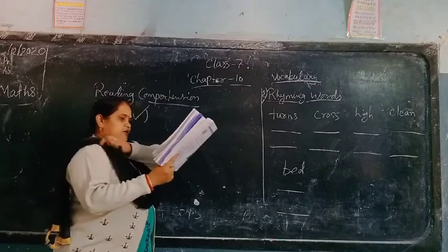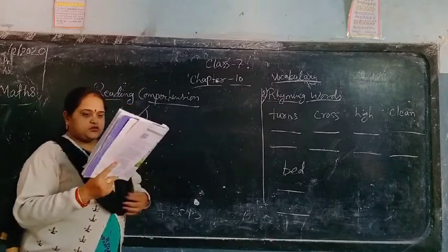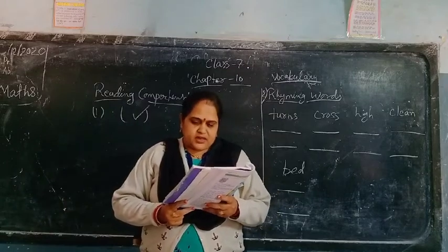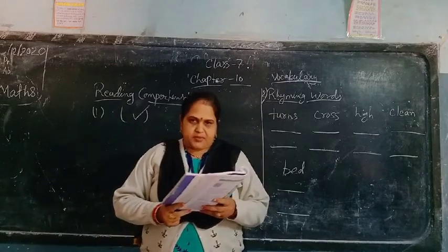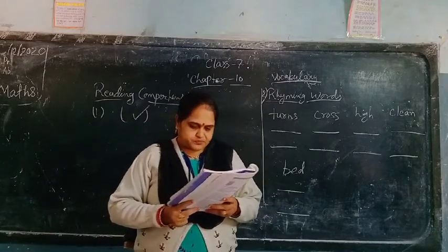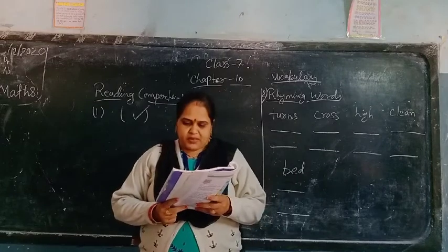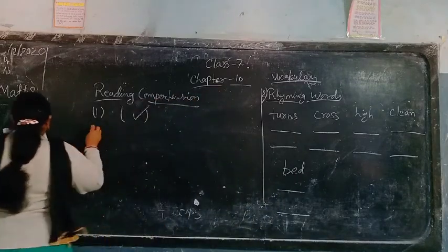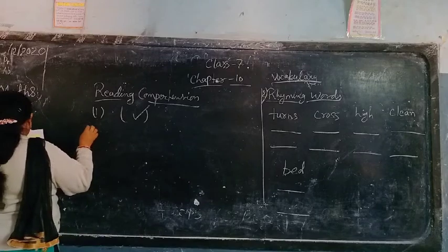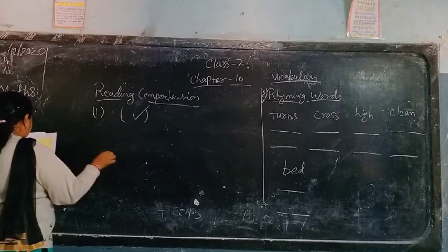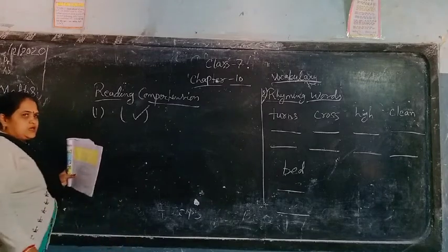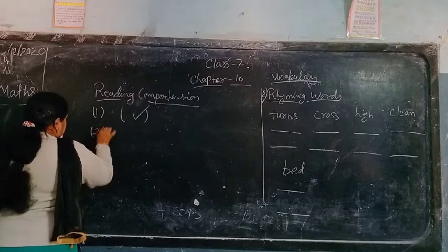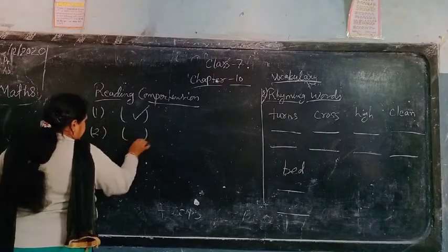Then the second one: 'It is not easy to cross the river in summer.' Aap thandhi mein, gaanv mein — kya river cross kar paate ho? Kya mushkil hai? It is not easy to cross the river in summer — so kya gaanv mein rivers cross nahi kar paate? So put a wrong mark.